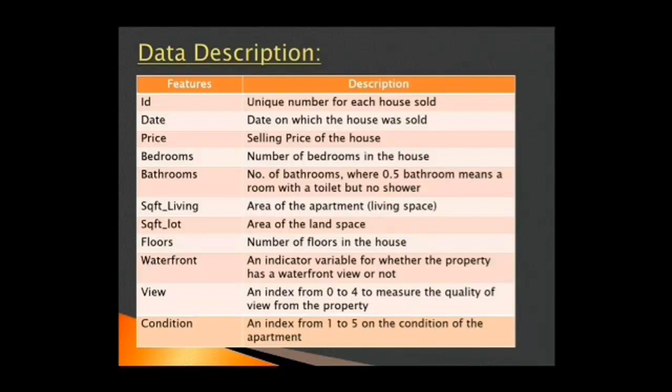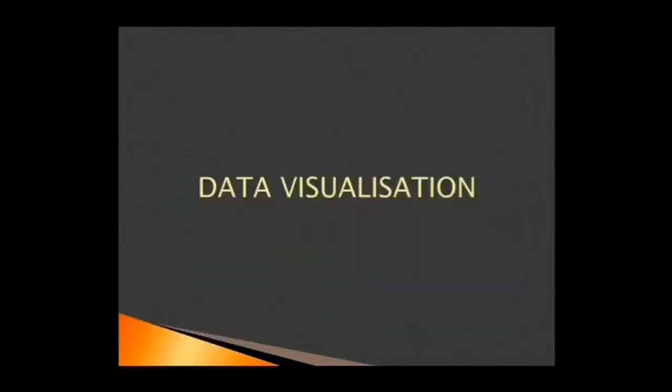To name a few, we have ID as the unique number for each household. Then price, which is the selling price of the house. Now, an important variable here is bathrooms, which implies number of bathrooms in the house. But on careful scrutiny of this variable, we find values such as 1.5, 3.5, 7.5. It sounds absurd if you say we have 3.5 bathrooms in our house. So, to clear our doubt, it is said that 0.5 bathroom means a room with a toilet but no shower.